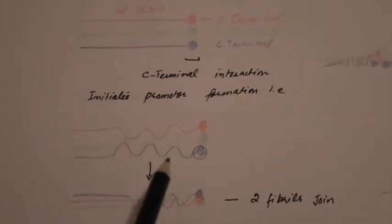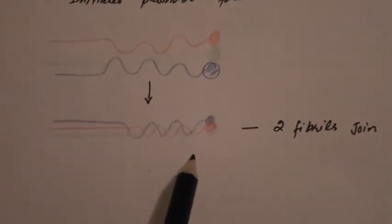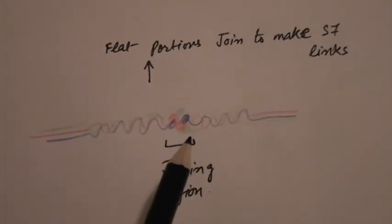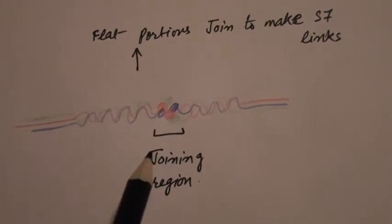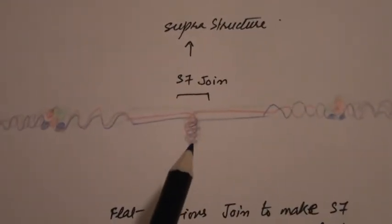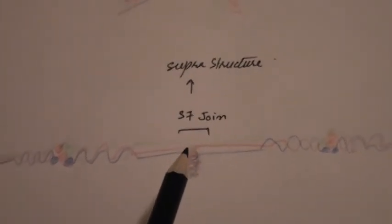Promoter formation is really nothing but fibril formation. This kink which is appearing is promoter formation, and here three alpha chains have combined to form a fiber. Once a fiber is formed, it can combine headwise to other fibers at the joining region. Their tails, which are the straight ends, can also be joined making the S7 region.